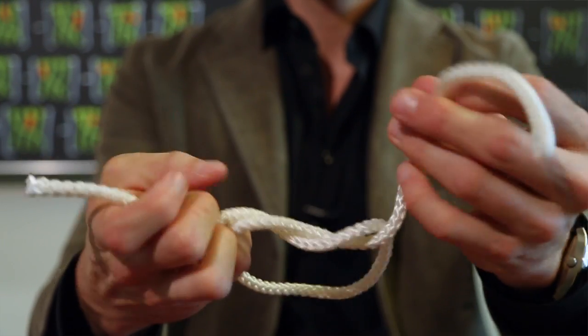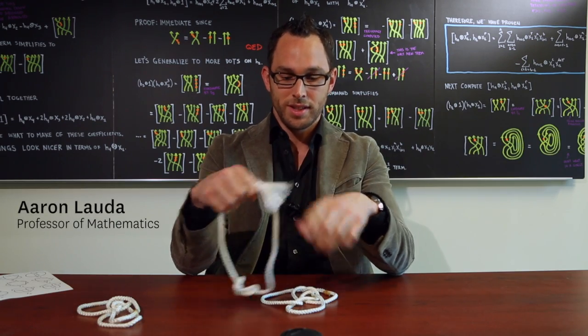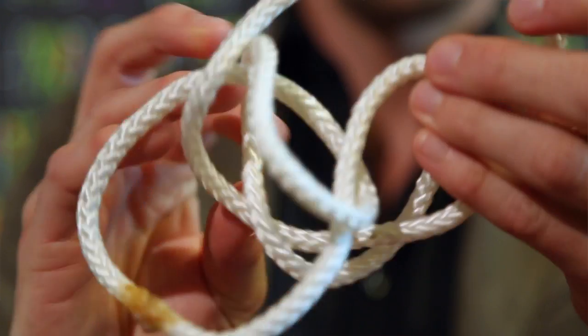If you take a piece of rope and we tie a knot and glue the ends together to where they're permanently sealed, so for example this knot here,